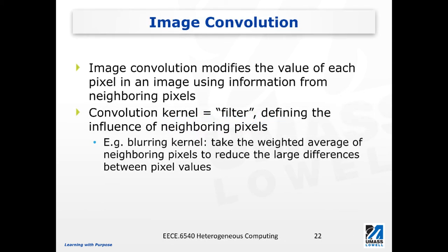The third example we're going to discuss today is image convolution. Image convolution is an operation that modifies the value of each pixel in the image using the information from its neighboring pixels. Think of convolution as an operation of filtering — we apply some kind of filter to the original image, and these filters define the influence of neighboring pixels.